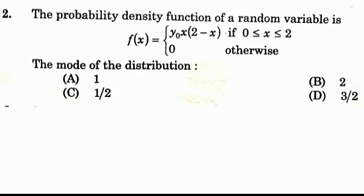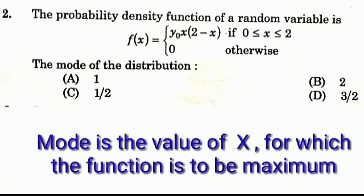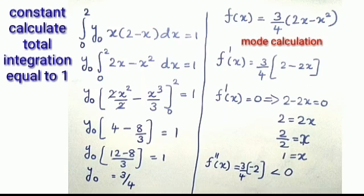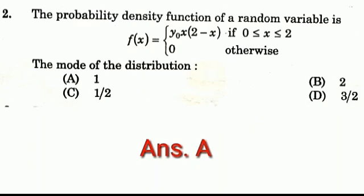Question number 2: The probability density function of a random variable is f(x) = y₀ · x(2 − x) for 0 ≤ x ≤ 2, and 0 otherwise. The mode of the distribution — Options: A:1, B:2, C:1/2, D:3/2. Answer: Option A (1).